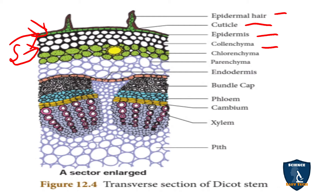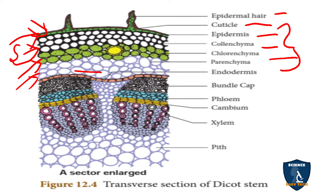Next to the hypodermis is chlorenchyma — that is parenchyma filled with chloroplasts. You can see the green portion filled with chloroplast; its function is photosynthesis. The next layer is parenchyma cells, whose function is storage. So the cortex is divided into three parts: hypodermis (collenchyma), the middle layer (chlorenchyma), and the inner layer (parenchyma), with functions of mechanical support, photosynthesis, and storage respectively.